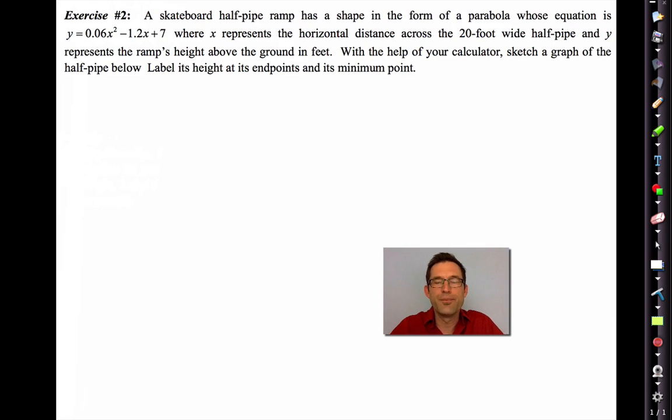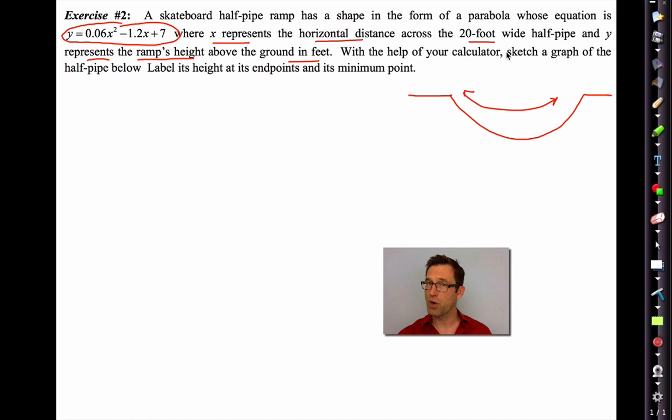Let's take a look at another problem. There's a lot of things in the world that have shapes of parabolas or shapes similar enough to parabolas that they can be modeled using a parabola. And a skateboard half pipe ramp is a good example. You guys have seen these things. I've got a park by my house. My son likes to skateboard. You got these things where the skateboarder is kind of going up and down. So we're going to model one of those using this equation. X represents the horizontal distance across the 20 foot wide half pipe. And Y represents the ramp's height above the ground in feet.